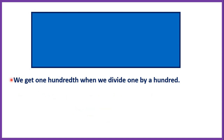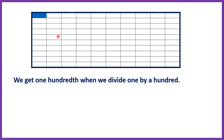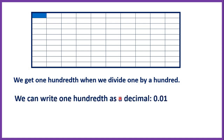We get 1 hundredth when we divide 1 by 100. Again we've got one big rectangle, and if we divide that into 100 pieces and keep only one piece, then we have 1 hundredth. We can write 1 hundredth as a decimal as well — that's 0.01. The first digit after the decimal point tells us how many tenths we have, and the second digit tells us how many hundredths we have. So 1 divided by 100 equals 0.01, or 1 whole divided by 100 equals 1 hundredth.